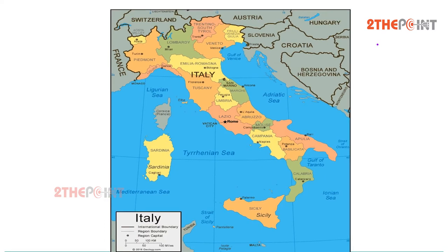It is a European country which consists of a peninsula delimited by the Alps, and it is surrounded by several islands. The capital city of Italy is Rome, and Italy is located in southern Europe.